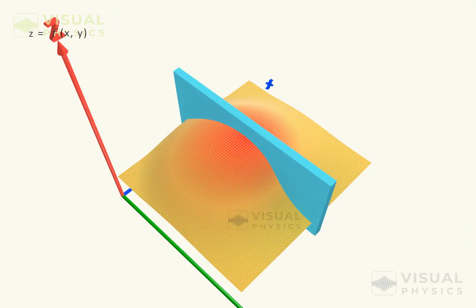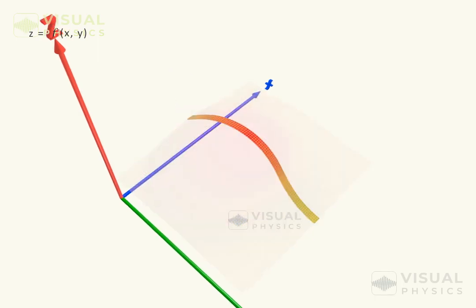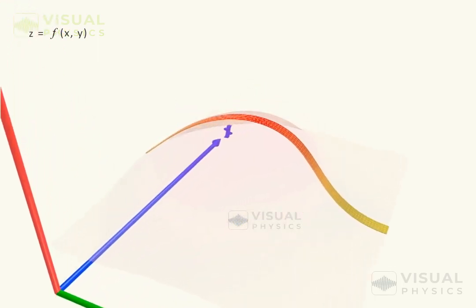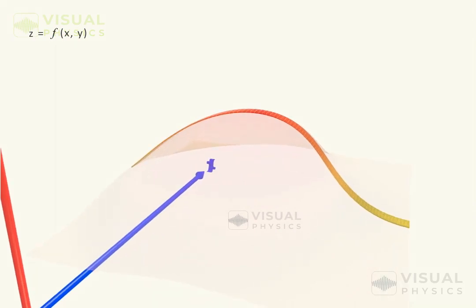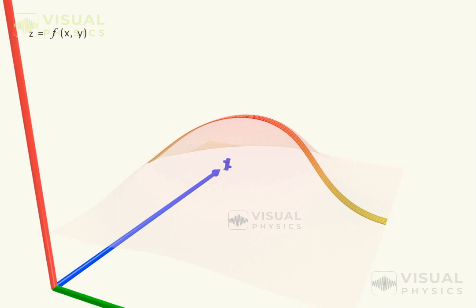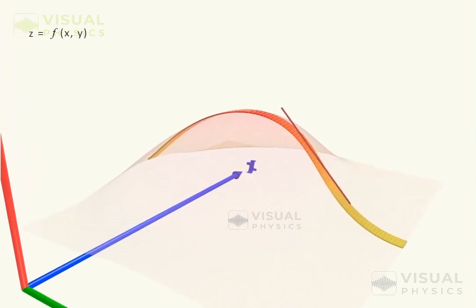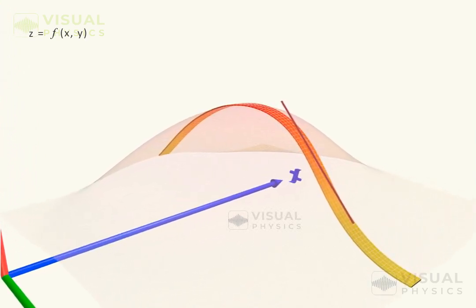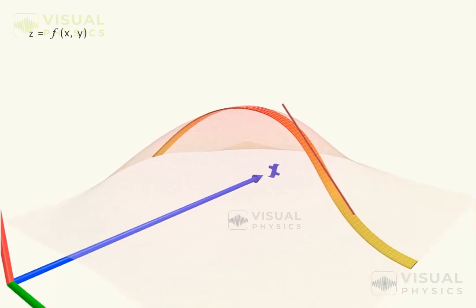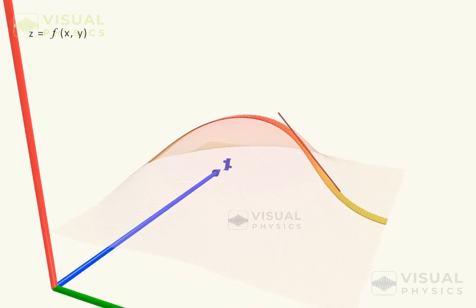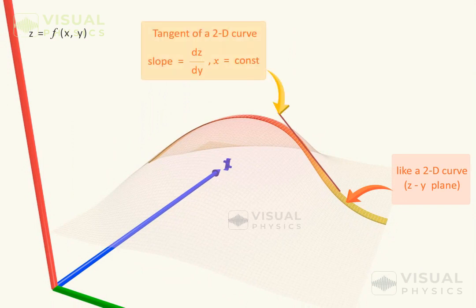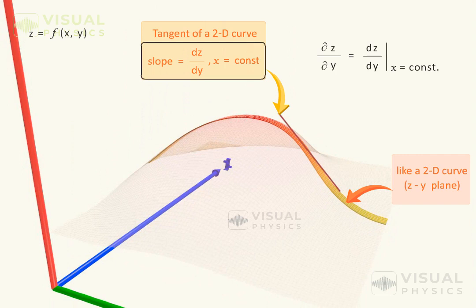Similarly, if we take the cross section of this surface with respect to the x axis, then the slope of the curve at this point with respect to the y axis gives us the partial derivative of the function with respect to y, taking x to be constant.